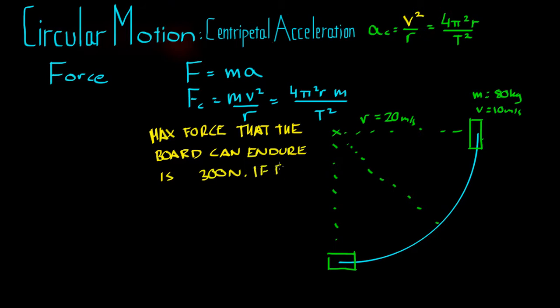The max force that the board can endure is 300 newtons. If the force is greater than 300 newtons, the board will slip. So let's see, if this skater were to go around this circle, or try to go around this circle, at 10 metres a second, whether the board would slip or not.